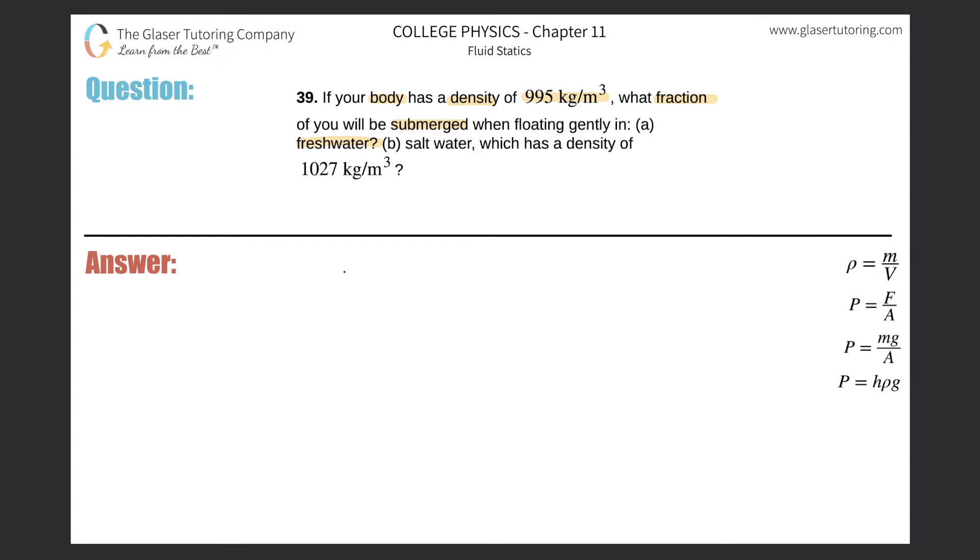So let's move forward. We have this formula that the fraction of an object submerged will be equal to the density of the object that's floating divided by the density of the liquid or the fluid in which the object is floating.